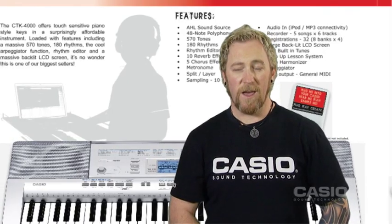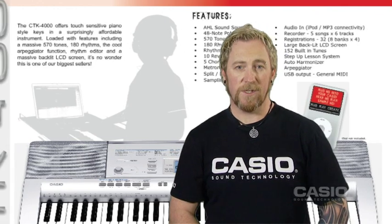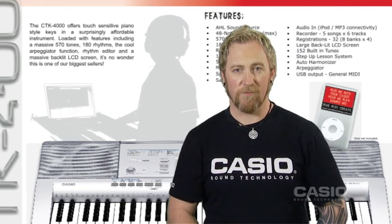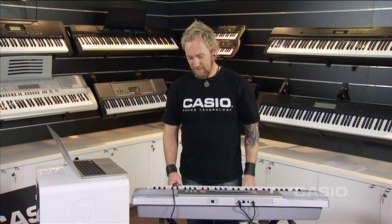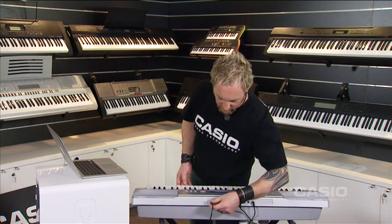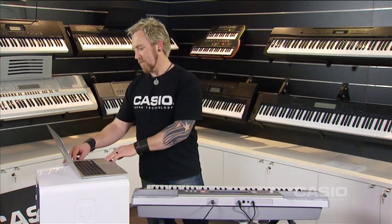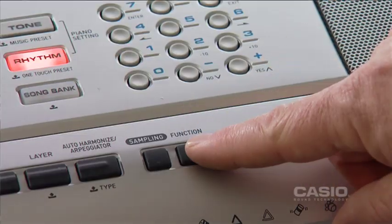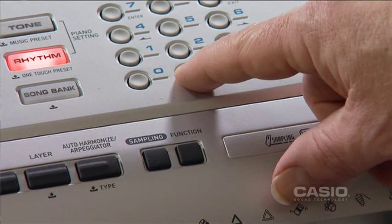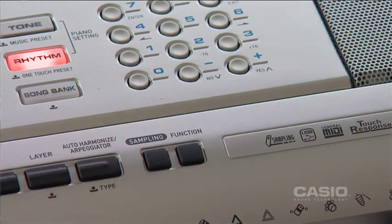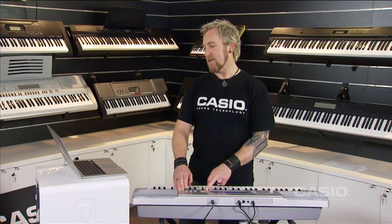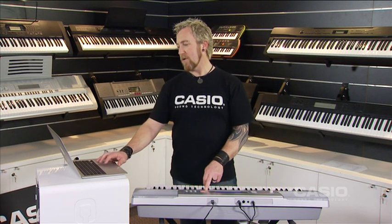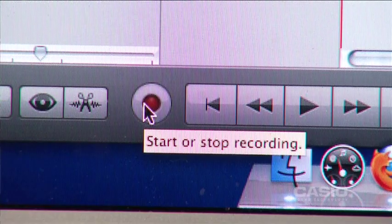Using plug and play, you can connect your Casio keyboard to a computer and create multi-track recordings. Step one is take the USB cable from the Casio plug and play pack, plug one end into your keyboard and the other end into your computer. Step two is to use the MIDI function menu to turn off the local control of your Casio keyboard. Step three is to open your recording program and press record.